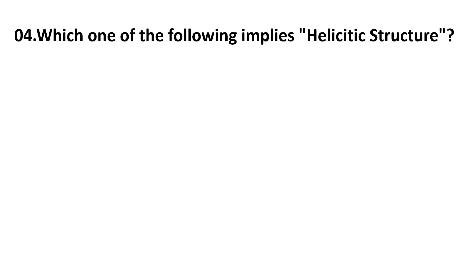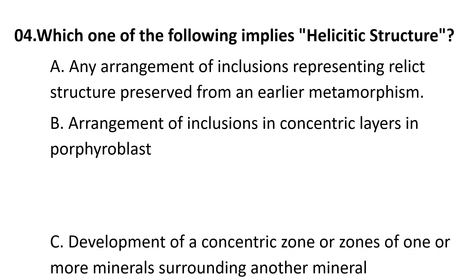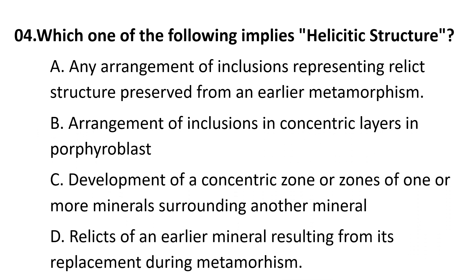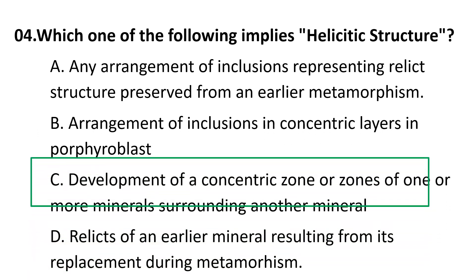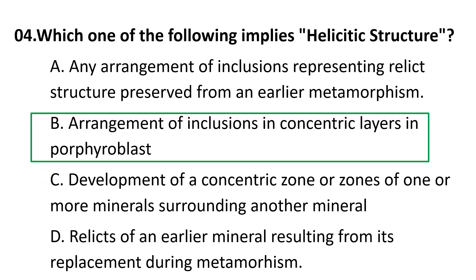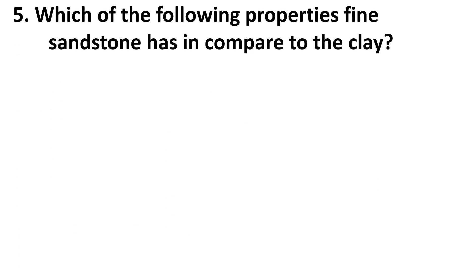Fourth question: Which one of the following implies helicitic structure? Choices are: A) Arrangement of inclusions representing relic structure, B) Arrangement of inclusions in concentric layers in porphyroblast, C) Development of concentric zones of one or more minerals surrounding another mineral, D) Relics of an earlier mineral descending from its replacement during metamorphism. The correct answer is B.